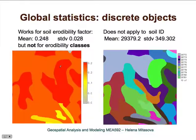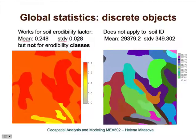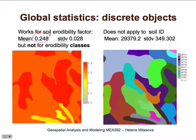How do we apply global statistics to discrete objects? Again, we need to distinguish between quantitative and qualitative data. For quantitative data, we can compute mean and standard deviation and similar statistical characteristics. Here is an example: a discrete map showing a raster representation of soil type polygons with different erodibilities. We can compute mean erodibility from these values, also weighted by area. Of course, we cannot apply mean and standard deviation to qualitative data, such as soil identification numbers.